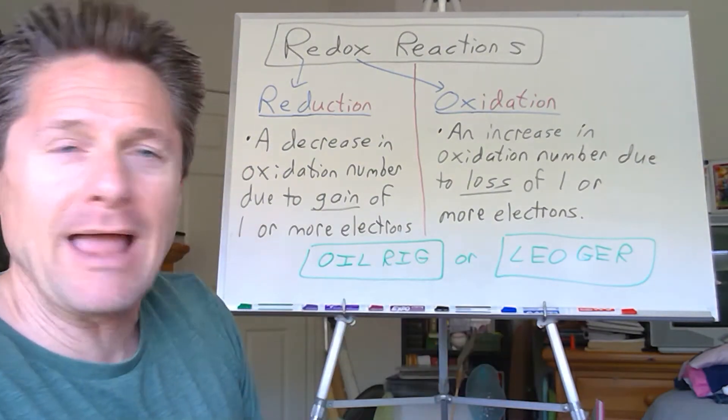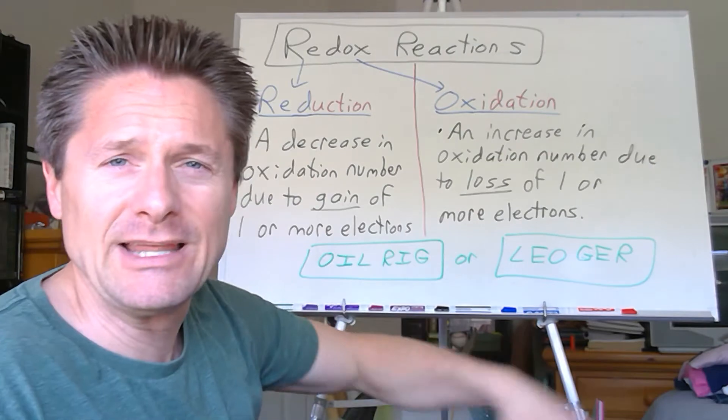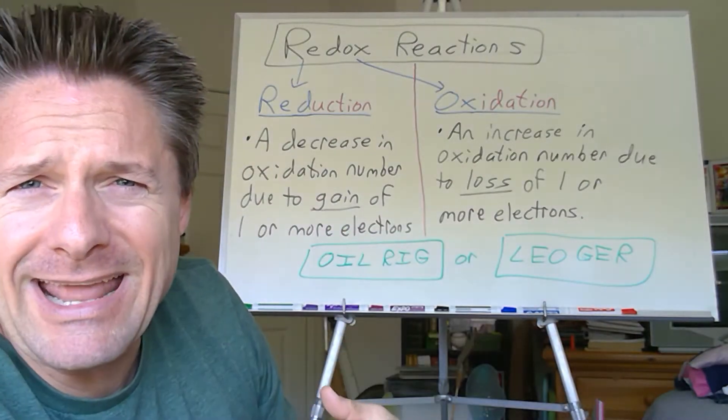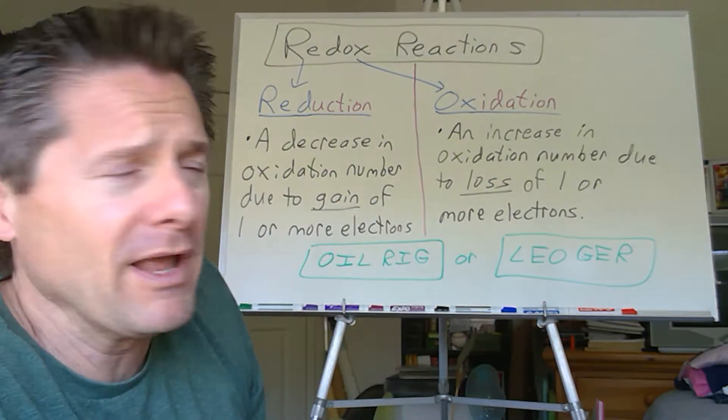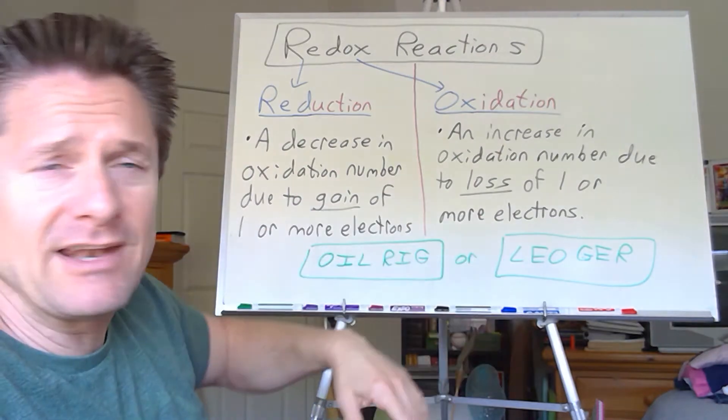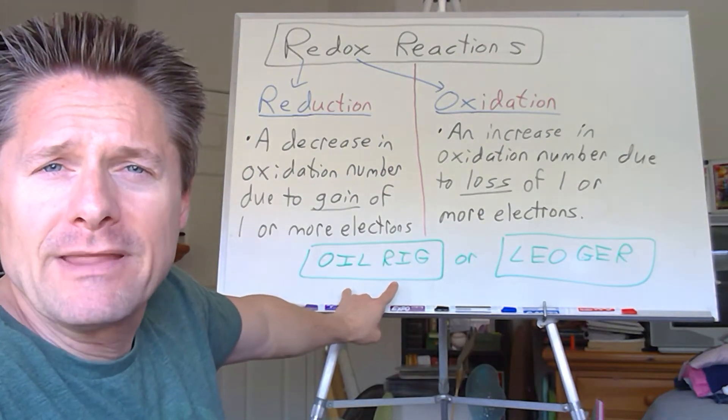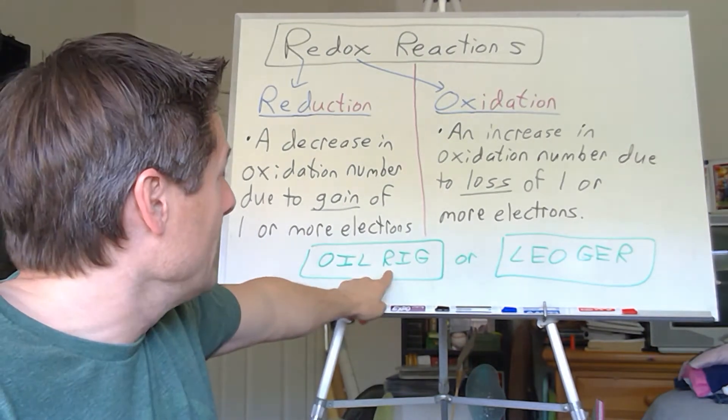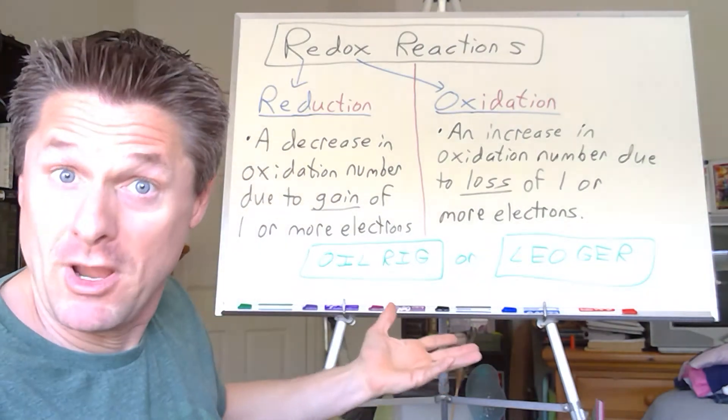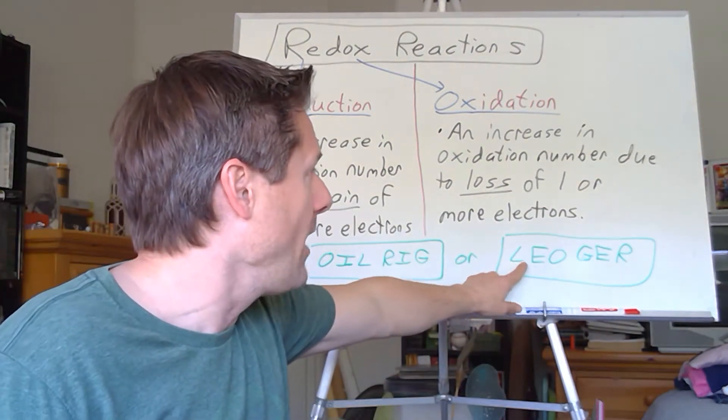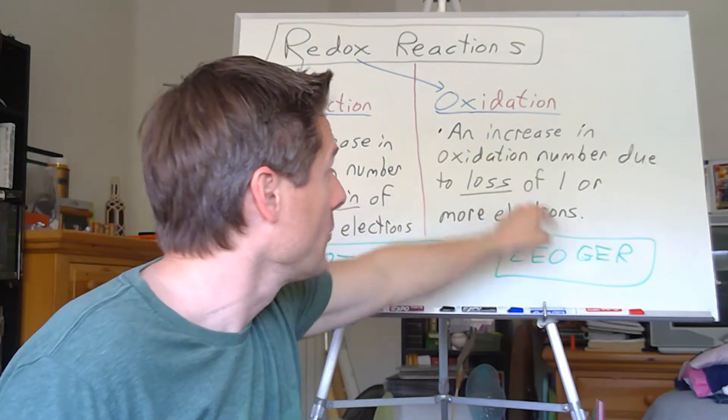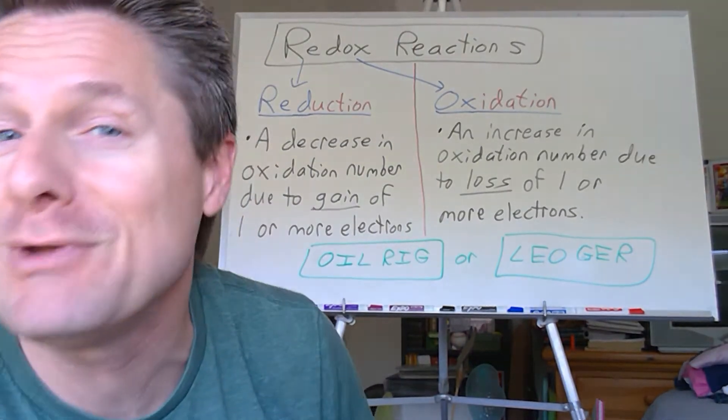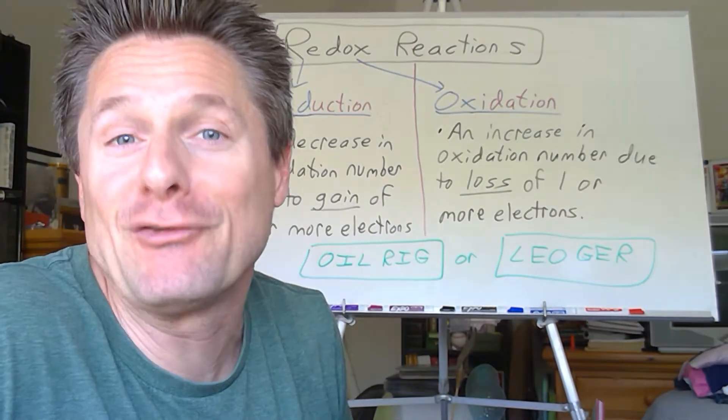And if you need some of these little acronyms, I've seen OIL-RIG, I've seen LEO-GER, I've seen a whole bunch of different ones. Whatever works for you. I personally don't use those. I just remember either I'm gaining a negative particle or losing one or more negative particles. And reduction is going down, oxidation is going up. But I've seen OIL-RIG. I remember learning this when I was in undergrad school. Oxidation involves loss, and reduction involves gain of electrons, of course. And with LEO-GER, loss of electrons is oxidation, gain of electrons is reduction. However you need to remember it, this professor doesn't care.